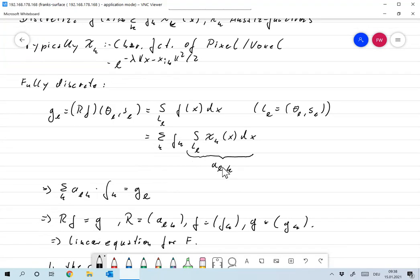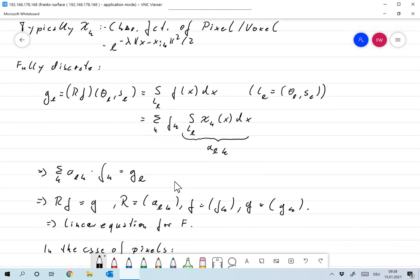Okay, denoting this as A_LK, this one reads sum over all K, A_LK times F_K is G_L. And now taking all the equations together, we get RF equals G, where R in this case is the matrix of the A_LK. F is the vector of all the pixel values, and G is the vector of all measurements.